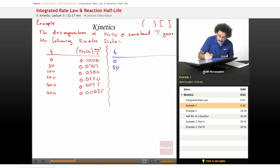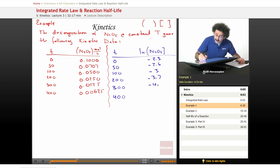It's going to be 0, 50, 100, 200, 300, and 400. And now we're going to take logarithms of these numbers. So when we take the logarithms of those numbers, we end up with the following data. This is ln of the N2O5 concentration in moles per liter. We end up with -2.3, -2.6, -3, -3.7, -4.4, and -5.